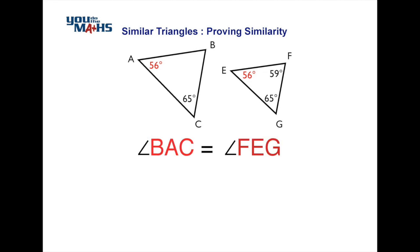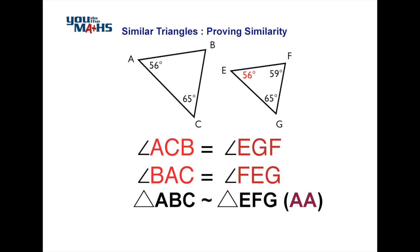That means angle BAC and angle FEG match. We can summarize all of that by stating our two pairs of matching angles and then stating the similarity condition between the two triangles, which is angle-angle. The squiggly line between triangle ABC and triangle EFG refers to similarity, and to the right we write the condition: angle-angle.